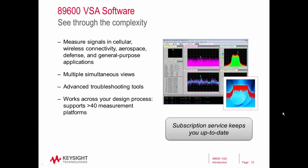To summarize the key capabilities covered today in the 89600 VSA software: we talked about the broad format and standard coverage for applications like cellular, wireless connectivity, and aerospace and defense. We talked about multiple simultaneous views with an unlimited number of traces and multi-measurements to measure and analyze signals at the same time. We also talked about advanced troubleshooting tools like unlimited markers, capture and playback, and color-coded traces. And lastly, we touched on the ability to connect the VSA software to a variety of hardware front ends — picking the platform that works best depending on where you are in your product development lifecycle. We also have an update subscription service to keep the software current as we release new versions.